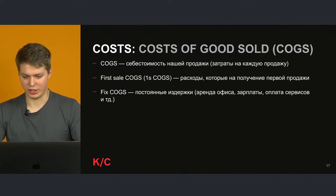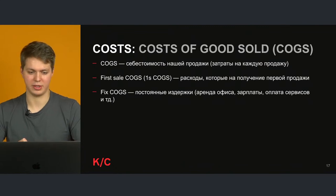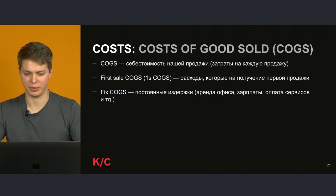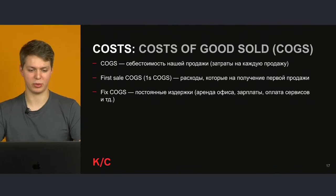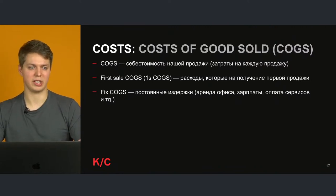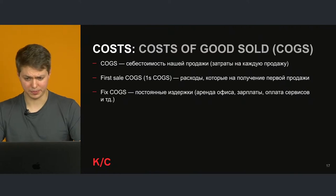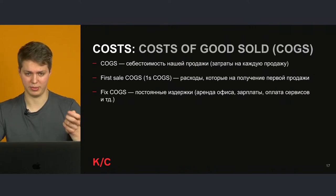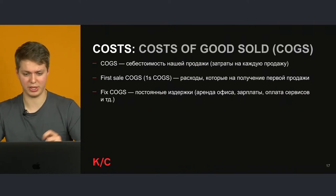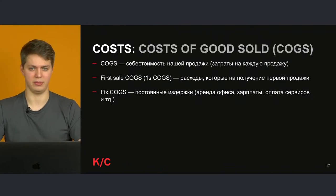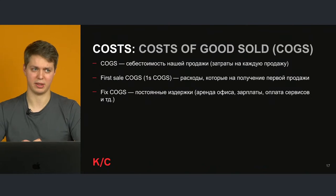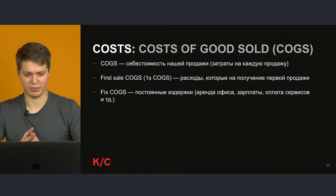Важный показатель — Costs of Goods Sold (COGS): себестоимость продажи — затраты на сотрудников, оплата дополнительных сервисов, рекламных сетей. Продавая покупки в приложении, мы тратим на рекламу, зарплату сотрудников и другие вещи. Например, метрика First Sale COGS — расходы на получение первой продажи. Иногда стоит увеличить расходы на первую продажу, если есть гипотеза: если вы потратили тысячу рублей, чтобы купить подписку за 990 рублей, но этот человек будет подписан весь следующий год — вы многократно вернёте эти деньги.